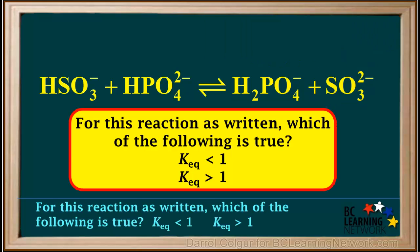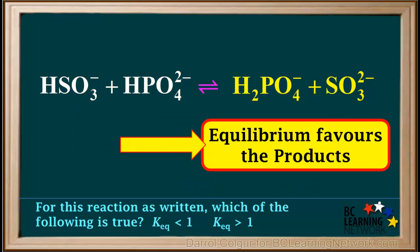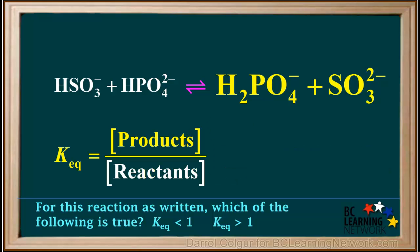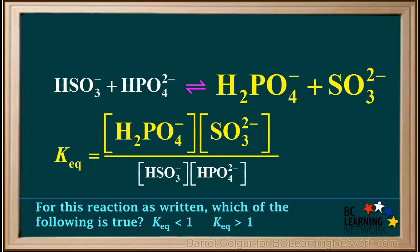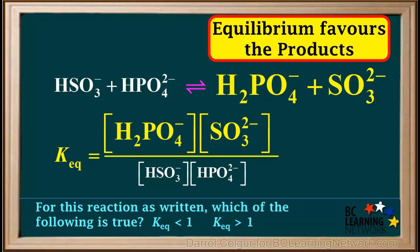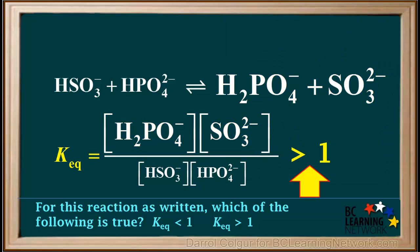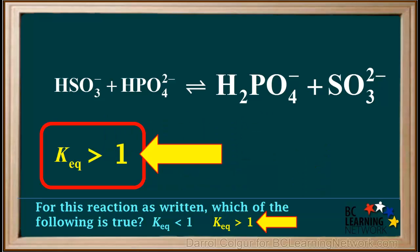The third question asks whether Keq for this reaction is less than one or greater than one. We've determined that equilibrium favors the products, meaning there is a greater amount of products than reactants at equilibrium. Keq is the ratio of products to reactants, and because equilibrium favors the products, the numerator is larger than the denominator. Therefore, the value of Keq for this reaction is greater than one.